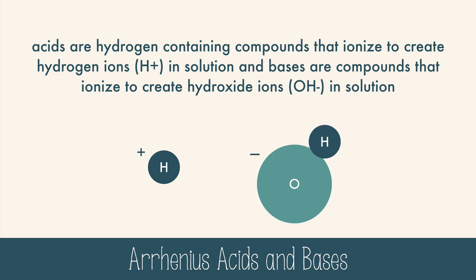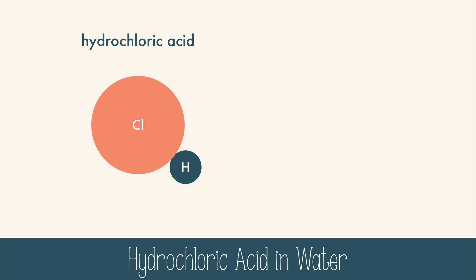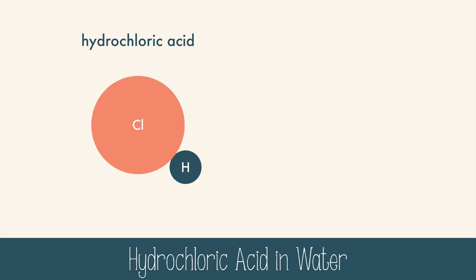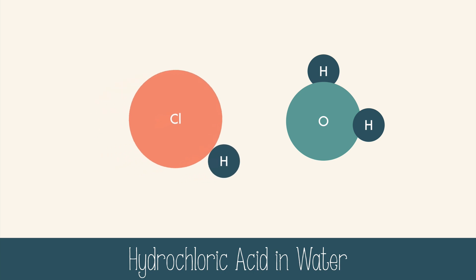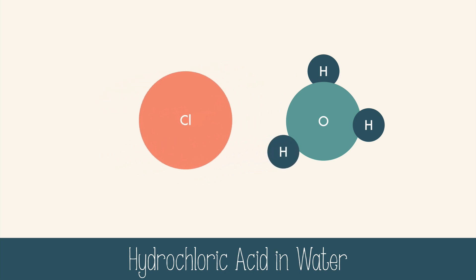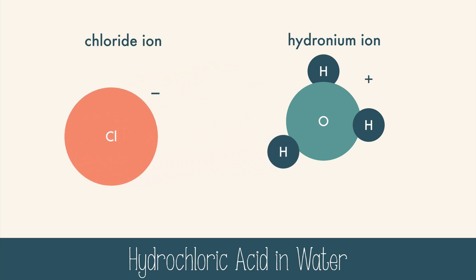Let's look at an example of this happening. Hydrochloric acid is a hydrogen atom and a chlorine atom covalently bonded. In water, the hydrogen abandons the chlorine, leaving its electron behind, and then it joins the water molecule to form hydronium ion.